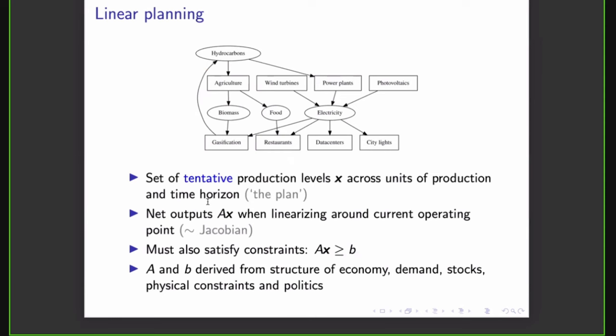To give an overview of what linear planning is, I've drawn a little example economy here to show that we have interdependence between different workplaces and that each workplace can have multiple outputs and multiple inputs. We're talking of concrete physical goods here, not of money. So we have a set of tentative production levels X across several units of production and given time horizon, which is what is the actual plan. We also have the net outputs of the system, which is A times X, when linearizing around the current operating point. So this is roughly the Jacobian of the system.